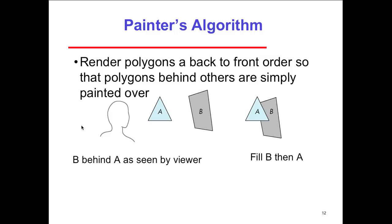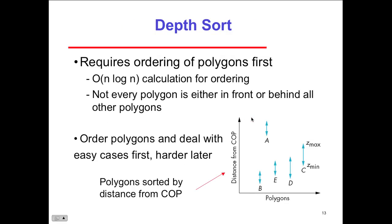With the painter's algorithm, polygons behind others are simply painted over. B is behind A as seen by the viewer — fill B first, then fill A. The order of filling determines which polygon appears in front. If A is in front of B, fill B first then fill A so you don't double-fill. Depth sort requires ordering the polygons first. We have to use time to set the order of the polygons. Not every polygon is simply in front or behind all others — some are to the left, right, top, or bottom.